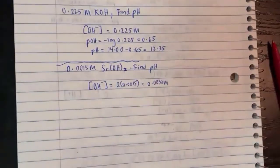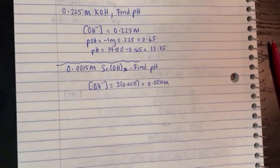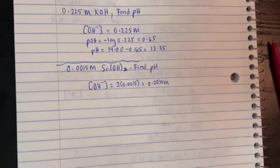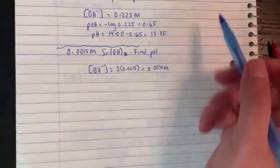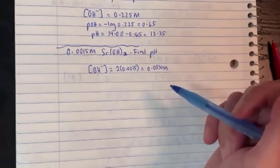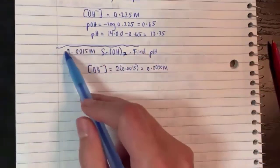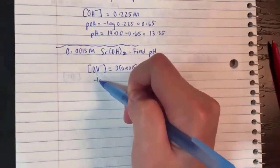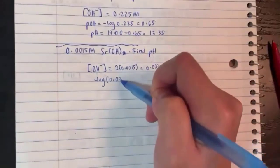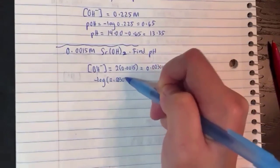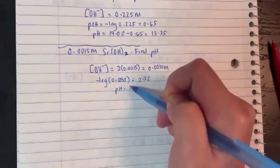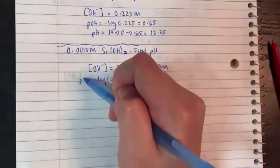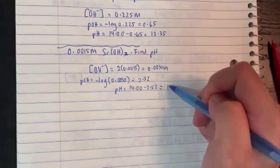Now that we have OH⁻ equal to 0.030, we take pOH equals minus log of 0.030, which gives 2.52. Then pH would be 14 minus 2.52, which gives 11.48.